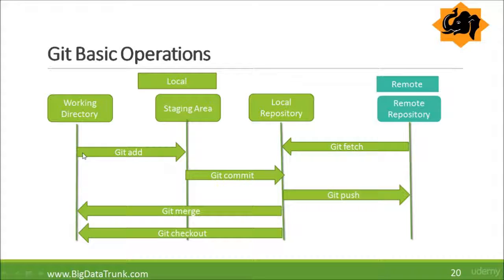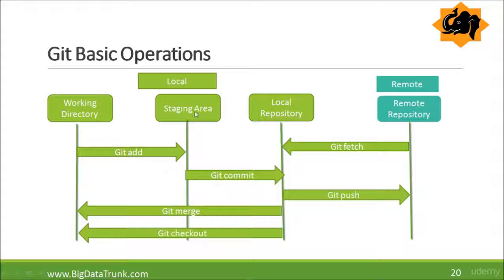If you are working on some file, you use the git add command. After using git add, you are on the staging area or index, where you confirm that you are satisfied with the changes you want to commit. Once satisfied, you run git commit and the changes get shipped to the local repository. This is the basic flow; we will learn these commands in detail later on.